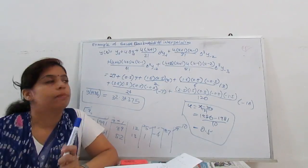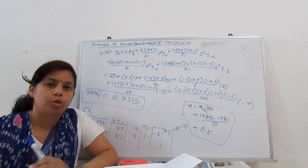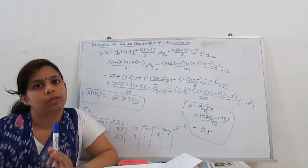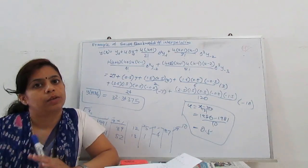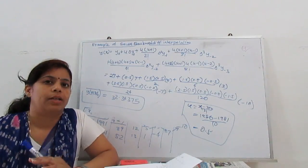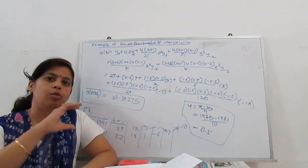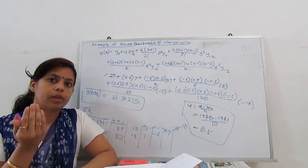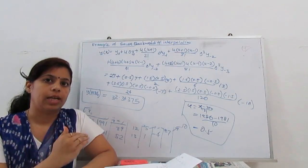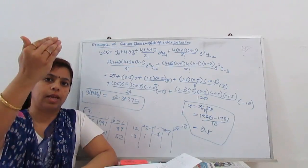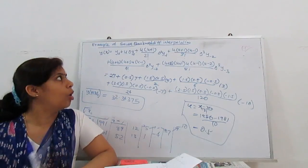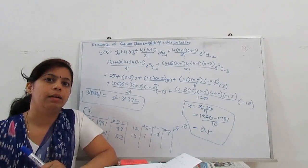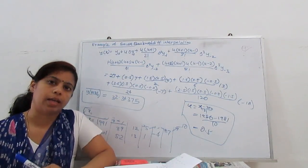This is the simplest example based on the Gauss backward formula. Now you can understand how to use Gauss forward and Gauss backward difference interpolation using the central difference table. The table is the same for both; the key is to use the center value nearest to the point being found, treating values above as negative subscripts and below as positive. Next we will move on to Stirling's and Bessel's interpolation formulas. Thank you very much.